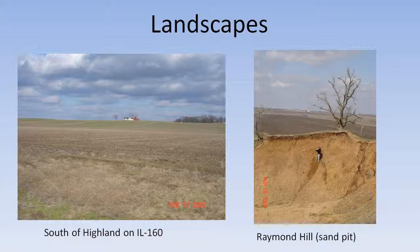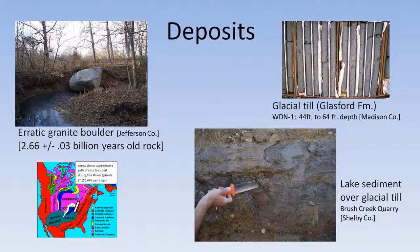The different deposits we find within the landscape include glacial till, which is a pebbly, fine-grained clay material. On the left is a large boulder that we discovered from a landowner — 2.6 billion years old is the age we obtained — and so that probably came from somewhere in Ontario or Quebec.